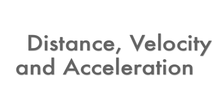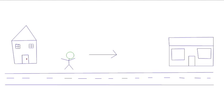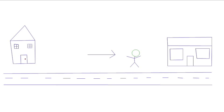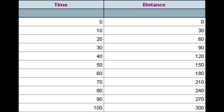Distance, velocity, and acceleration. A person leaves their house and walks directly east to the neighbor's door, 300 meters away. After 10 seconds, we measure the person's position as 30 meters, at 20 seconds 60 meters, at 30 seconds 90 meters.